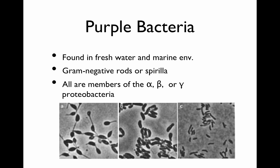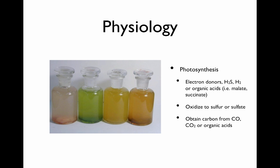Let's talk about the purple bacteria. They are found in freshwater and marine environments. They are gram-negative rods or spirilla, and members of the proteobacteria — alpha, beta, or gamma proteobacteria. In their photosynthesis, they will use electron donors such as hydrogen sulfide, hydrogen, or even organic acids. They do not have to use inorganic sources of electrons, and they will oxidize sulfur or sulfate. They obtain carbon from carbon monoxide, CO2, or organic acids.